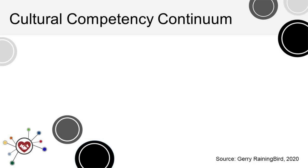Understanding different cultures often happens in stages and is an ongoing effort. This cultural competency continuum illustrates several stages and can help to broadly gauge where a person, organization, or community is on their journey to cultural humility.